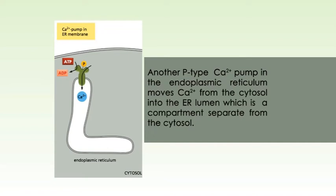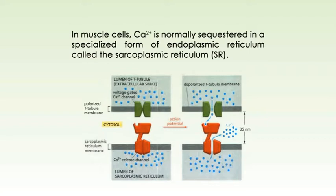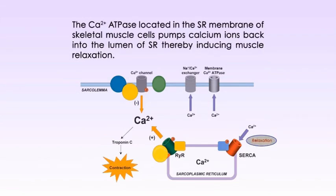Another P-type calcium pump in the endoplasmic reticulum moves calcium ions from the cytosol into the endoplasmic reticulum lumen, which is a compartment separate from the cytosol. In muscle cells, calcium ion is normally sequestered in a specialized form of endoplasmic reticulum called the sarcoplasmic reticulum, or SR. The release of the stored calcium ions via ion channels from the sarcoplasmic lumen to the cytosol causes muscle contraction. The calcium ion ATPase, located in the SR membrane of skeletal muscle cells, pumps calcium ions back into the lumen of the SR, thereby inducing muscle relaxation.